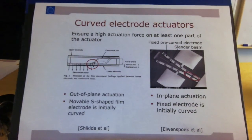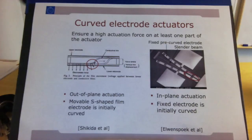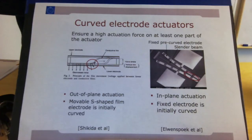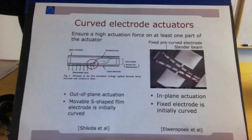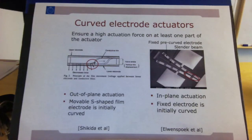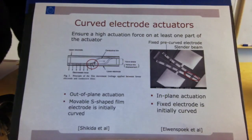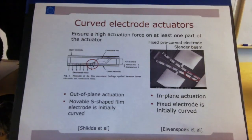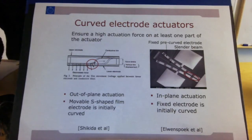So what is the problem with a parallel plate electrostatic actuator? Electrostatic forces diminish with the square of the distance. That means they can be very high at very small distances — say, if you need to deform something one or two micrometers, you can get very high electrostatic force. But if you want to deform something 20 or 100 micrometers, the forces become impractically low. One way of circumventing this problem is to work with so-called curved electrode actuators.